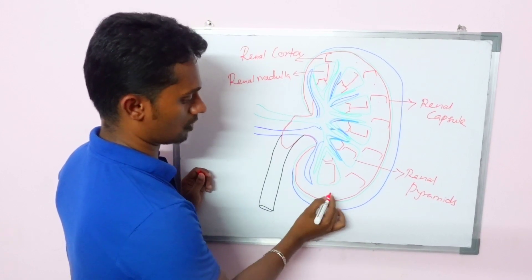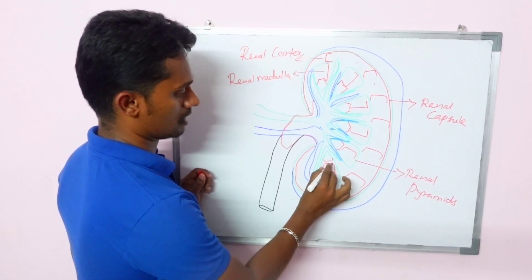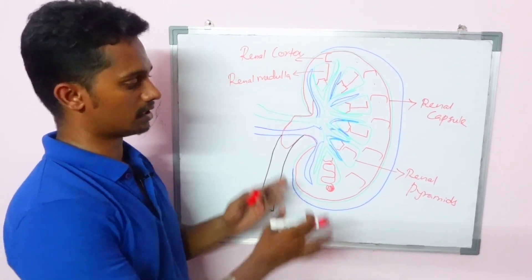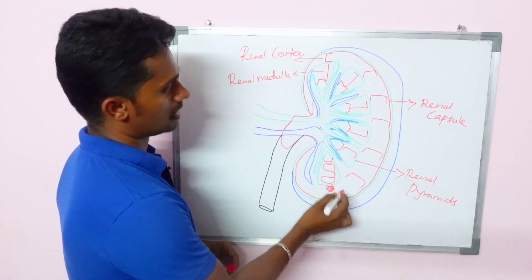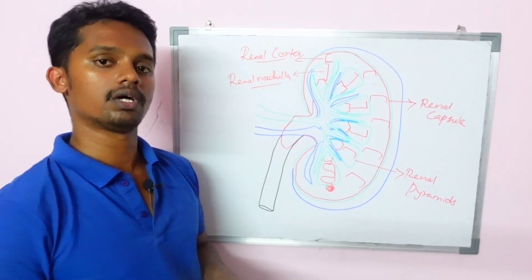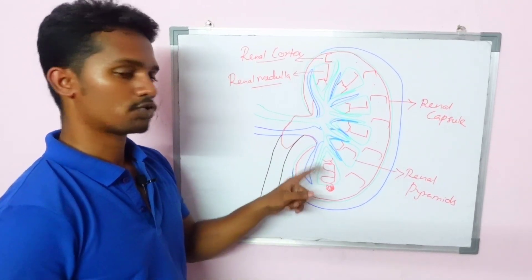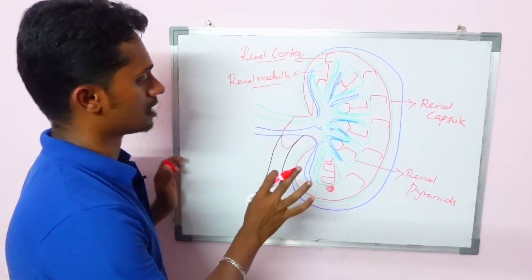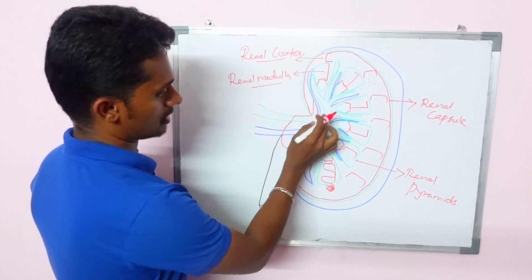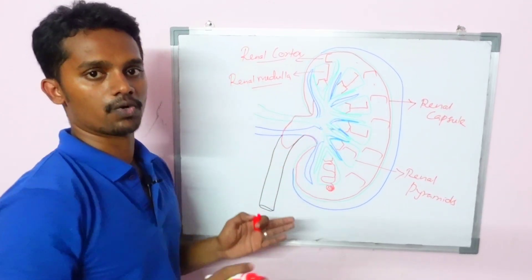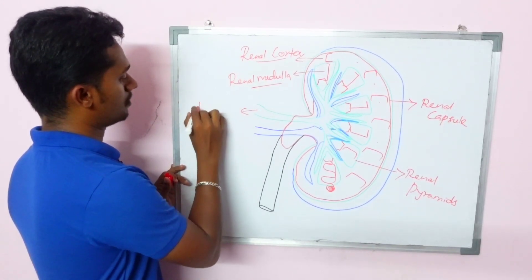If you look at a nephron, you will see the nephron within a glomerulus. The nephron is a large and complex structure. You have to understand the nephron from the kidney's perspective. The nephron is located in both the renal cortex and the renal medulla. Let's look at these parts of the nephron structure.